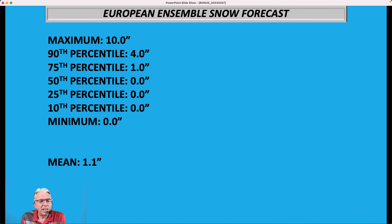I had showed this in the daily weather update about Saturday night and Sunday. The European Ensemble snow forecast where out of all 50 Ensemble members, the maximum was 10 inches of snow, the 90th percentile was 4 inches, the 75th was 1, and by the time you got to the 50th it was 0, all the way down to the minimum. And the mean was 1.1 inches, the average of all 50 members.